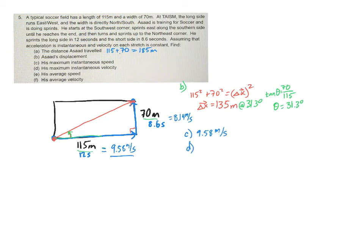Okay? So now we go on to letter D. Now, letter D is his maximum instantaneous velocity. In the last video, I said that these two are basically the same thing. In fact, the number will always be the same. The only difference is that velocity has direction. So whatever the maximum instantaneous speed is, the maximum velocity will be the same. Instantaneous velocity, 9.58 meters per second. And I need a direction. And that is actually directly east or at zero degrees or east. Either one of those will work.